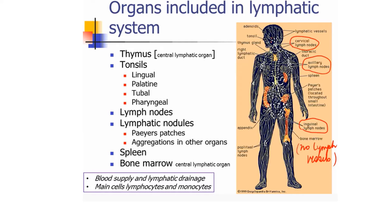We can divide lymphatic organs into primary (central) and secondary lymphatic organs. Primary organs are the thymus and bone marrow. Secondary organs include tonsils — lingual, palatine, tubal, and pharyngeal — the lymph nodes, and lymphatic nodules present as Peyer's patches in the intestine. We will be covering the spleen, the lymph node (already done), thymus, and tonsils.